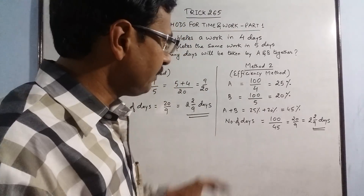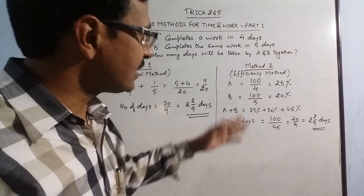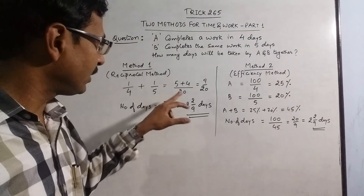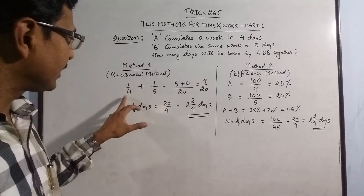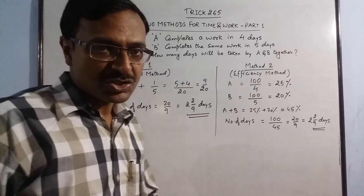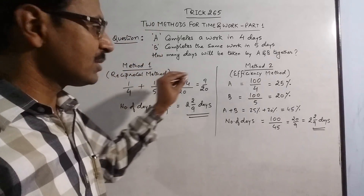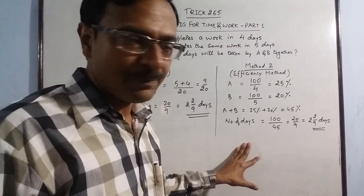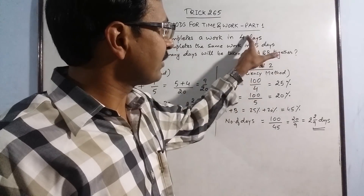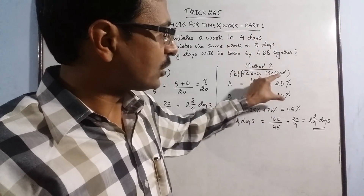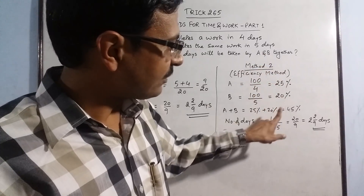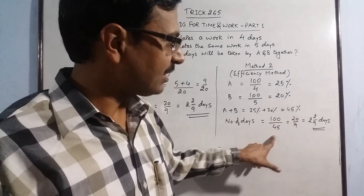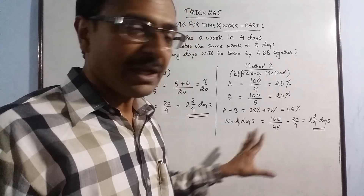Personally, I prefer the efficiency method because it does not involve addition of fractions. Here I used simple numbers 4 and 5, so the fraction addition was easier, but whenever the number of days is in a rational form or decimals, that calculation becomes time-consuming. So I always prefer the efficiency method: A = 100 divided by number of days, B = 100 divided by number of days. Add the two efficiencies, and 100 divided by that total percentage efficiency gives the total number of days for A and B together.